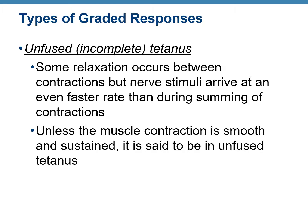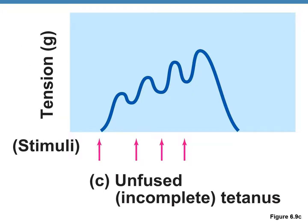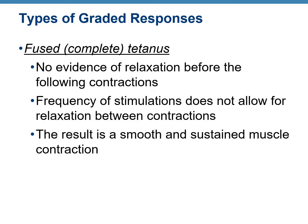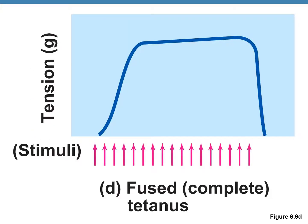Unfused or incomplete tetanus is when some relaxation occurs between muscular contractions but the stimuli arrive at an even faster rate than during the summing of contractions. Fused or complete tetanus occurs when stimulations come at such a great frequency that no relaxation occurs between contractions, resulting in a smooth and sustained muscle contraction.